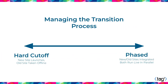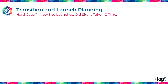The next scope consideration is the transition process. On one end of the spectrum, you have the idea of a hard cutoff — it's pretty straightforward. You run your old site, you put your new site live, you take your old site offline. On the other end of the spectrum, you have a phased migration, where you run your old site and your new site integrated in some fashion for some period of time.